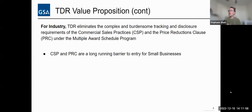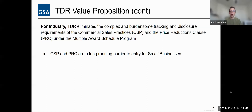For industry, removing government contracting-specific information that differs from the commercial market is one of the main goals. We have so many new companies coming into the federal space, and trying to explain the commercial sales practice — tracking it, understanding the basis of award customer discount ratio, and how it's affected by the price reductions clause — is very difficult to explain to new companies. Because it is so unique to the MAS program and not used by any other IDIQ out there, TDR provides the opportunity to find a better way to do pricing that is more commercial in nature.